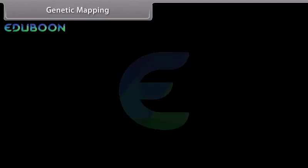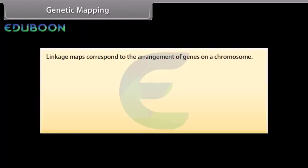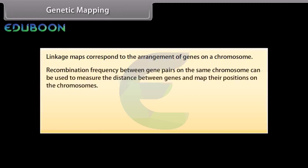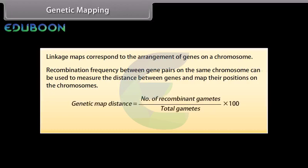Linkage maps correspond to the arrangement of genes on a chromosome. Recombination frequency between gene pairs on the same chromosome can be used to measure the distance between genes and map their positions on chromosomes. Genetic map distance equals the number of recombinant gametes divided by total gametes, multiplied by 100. Genetic map distance is measured in centimorgans.